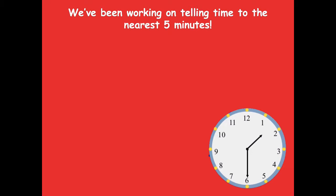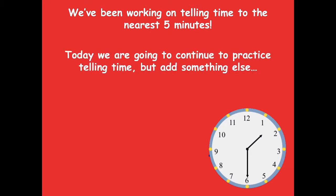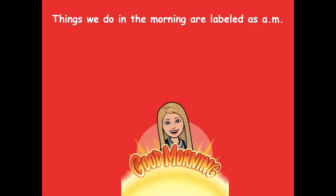We've been working on telling time to the nearest five minutes. Today we're going to add AM and PM. Things we do in the morning are labeled as AM — like good morning, rise and shine. We use AM as a short way to talk about the time between 12 o'clock midnight and 12 noon. Think of it as things that happen once we wake up in the morning, right up around lunchtime.